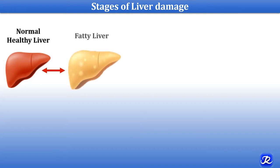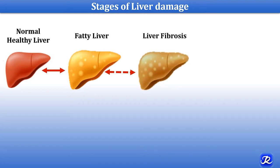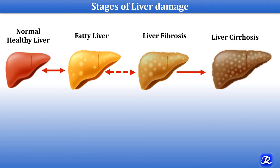Whenever there is accumulation of fat in hepatocytes, it is called fatty liver. When that fat accumulation is associated with inflammatory changes, it leads to scar formation in the hepatocytes. This scarring leads to fibrosis, and the condition is called liver fibrosis. When liver fibrosis becomes extensive in a chronic condition, entire hepatocytes become scarred, leading to the irreversible condition of liver cirrhosis.